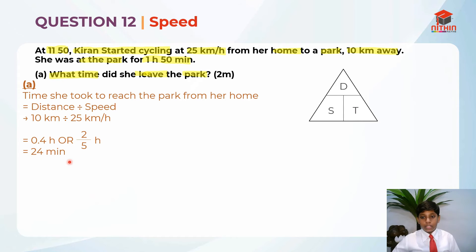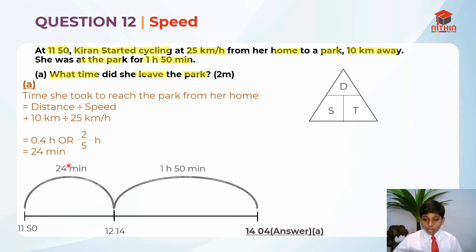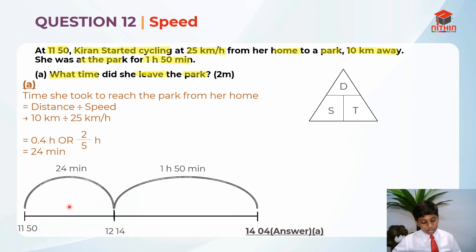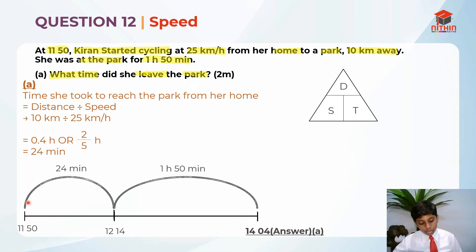0.4 hours is also equal to 24 minutes. Now we need to draw the timeline. Since this is in a 24-hour clock format, we use minutes. From 11:50 she traveled 24 minutes to reach the park, arriving at 12:14. So at 11:50 she was at home, and at 12:14 she arrived at the park.